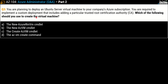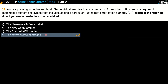Moving on to question number three. You are planning to deploy an Ubuntu Server virtual machine to your company's Azure subscription, and you are required to implement a custom deployment that includes adding a particular trusted root certification authority. Which of the following commands should you use to create the virtual machine? Options are: A) New-AzureRmVM, B) New-AzVM, C) create az vm, and D) az vm create. The correct answer is option D — the az vm create command.